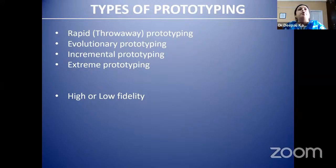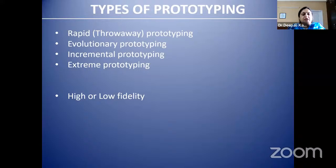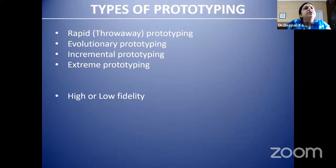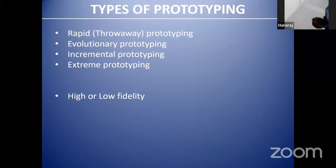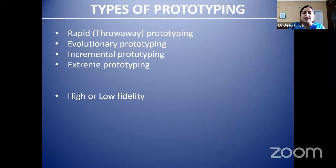There are different types of prototyping: rapid prototyping, evolutionary prototyping, incremental, and extreme prototyping. We also talk in terms of high and low fidelity. Rapid prototyping is a three-dimensional approach — the product is created, tested, and optimized for characteristics like size, shape, and durability, often using 3D printing. It is typically a throwaway kind of prototype, meaning the material or colors in the prototype need not be retained in the final product.